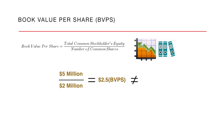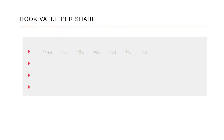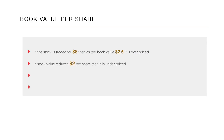The book value per share will not always be equal to the market value of the share. If the stock is traded for 8 dollars, then as per the book value of 2.5 dollars, the share price is overvalued. If the stock value reduces to 2 dollars per share, then it is undervalued.